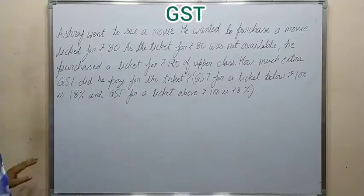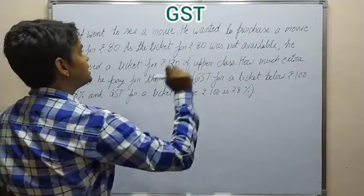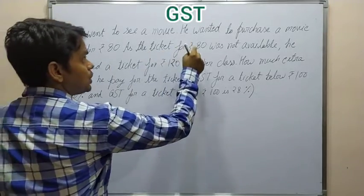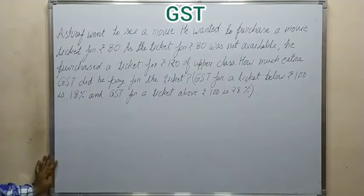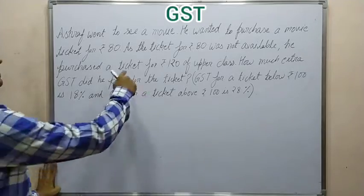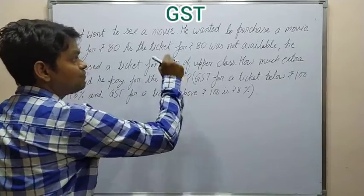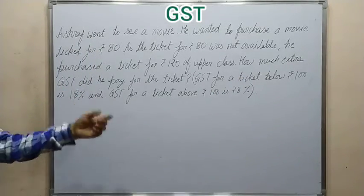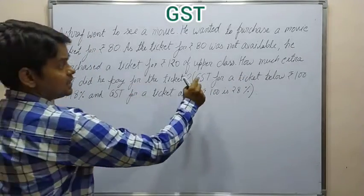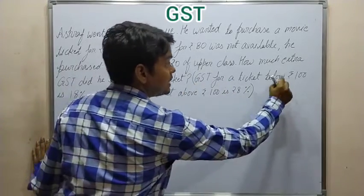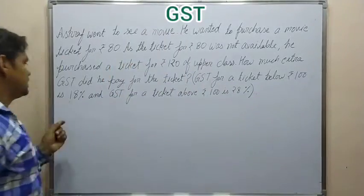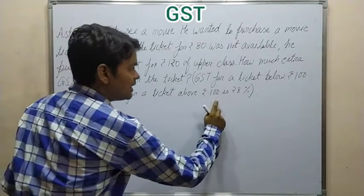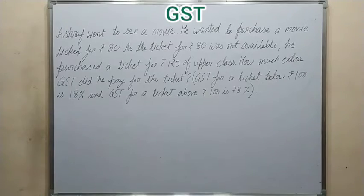Now friends, in this problem, Ashraf went to see a movie. He wanted to purchase a ticket for Rs. 80, but the Rs. 80 ticket was not available. Then he purchased an upper class ticket at the rate of Rs. 120. GST for the ticket below Rs. 100 is 18%, and above Rs. 100 is 28%.